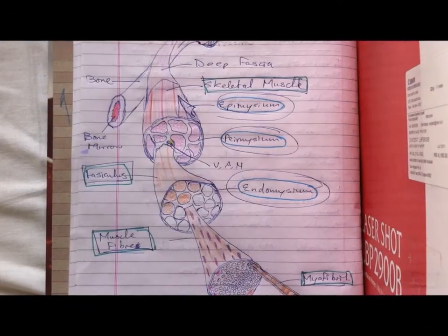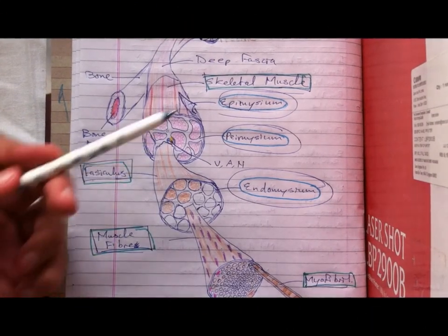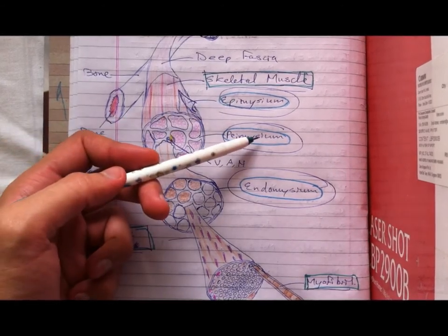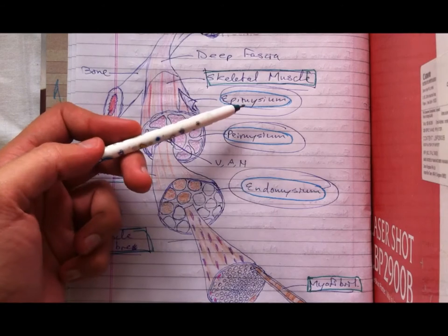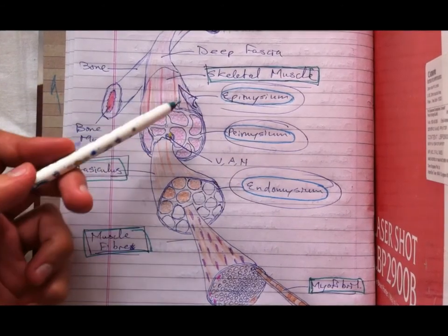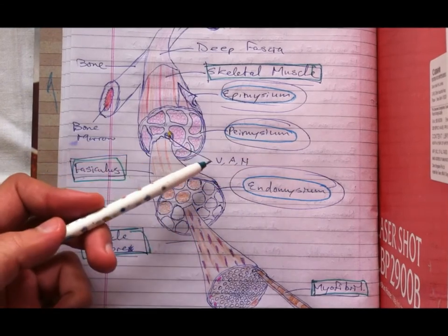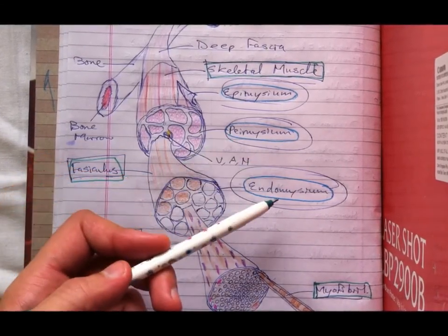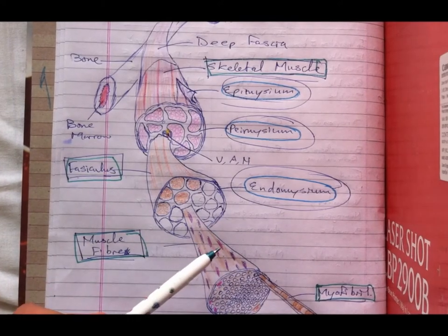There are three coverings, or three sheaths, that you need to know about. The first is the epimysium — it covers the skeletal muscle. Then there's the perimysium, the second sheath — it covers the fasciculus. Then the last one, the endomysium, covers the muscle fibers.